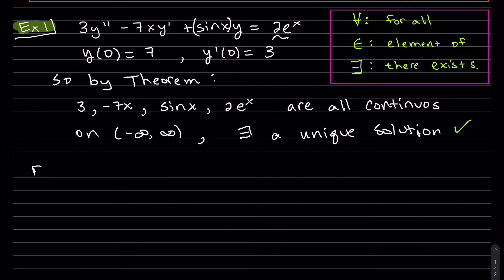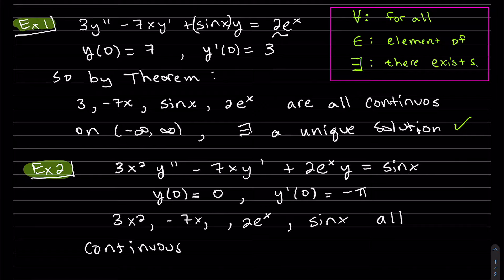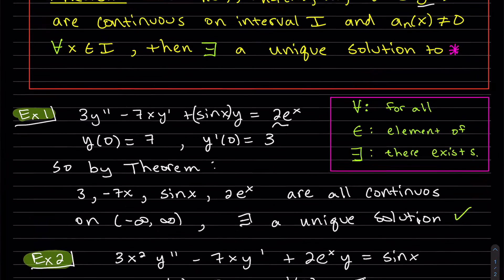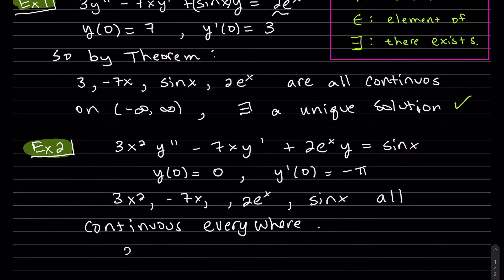Another example. So looking at the coefficients in terms of x, we have 3x squared. So these are all continuous everywhere. But our other condition has to be a_n(x) doesn't equal to 0. So 3x squared equals 0 at x equal to 0.